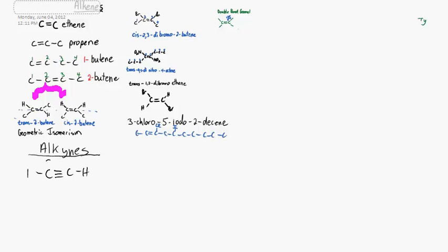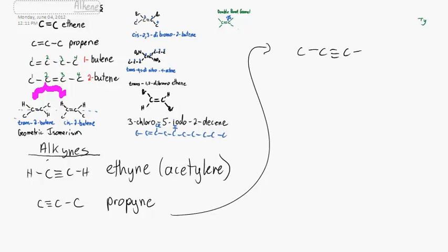Let's jump quickly to triple bonds or alkynes. Instead of ethane or ethene, we have ethyne, commonly known as acetylene, used in welding. Three carbons with a triple bond there, propyne.